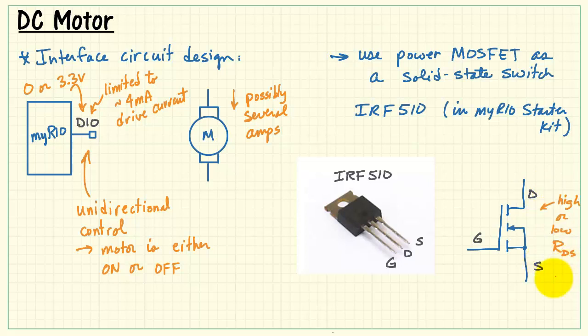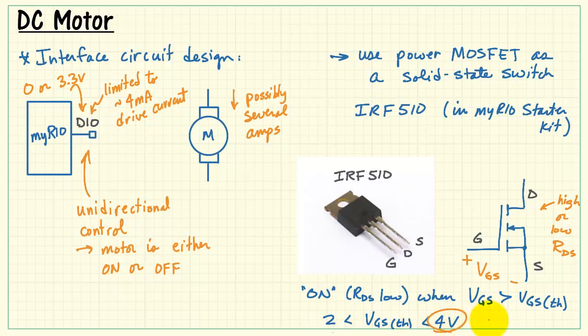This is an n-channel enhancement mode MOSFET, by the way. Now the gate-to-source voltage VGS controls whether or not the channel resistance RDS is high or low.